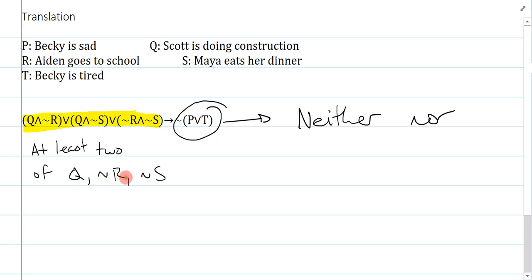So, I would say something like this, if at least two of Scott doing construction or Aiden doesn't go to school or Maya doesn't eat her dinner occur, then neither Becky is sad nor is she tired. I'm not going to bother writing that out. You can try it for yourself. It's a good exercise for you to do.